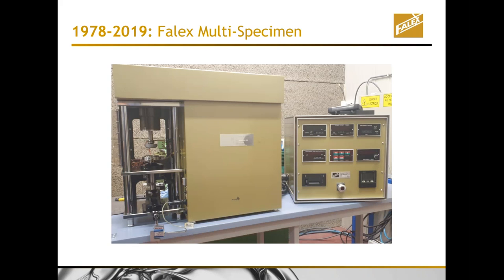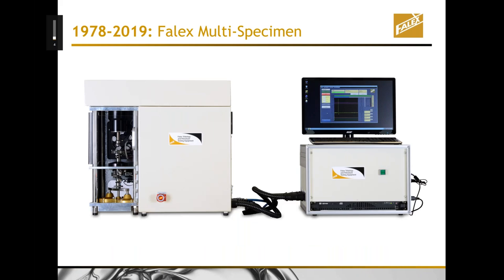The model Bob developed in 1978 took a very simple one-piece device and turned it into something that could be programmed — you could change the speeds, change the loads, increase the testing capacity. It became a much more versatile tribology test machine through easily changeable adapters. By 2019, the equipment was fully computerized for programming, control, and data acquisition.